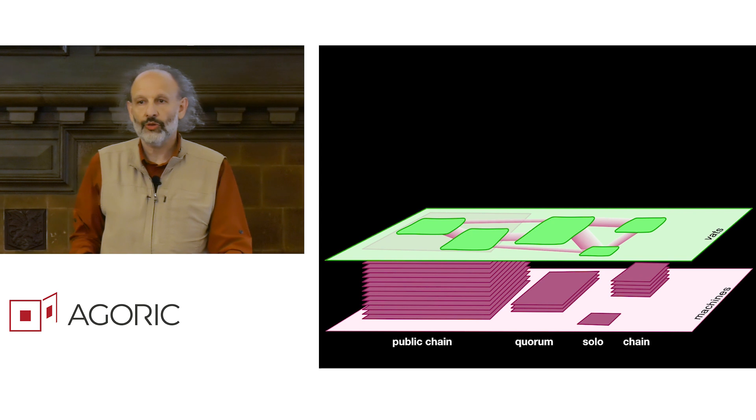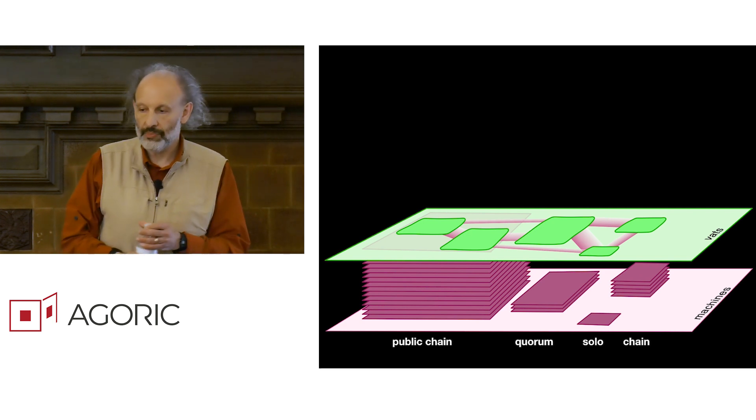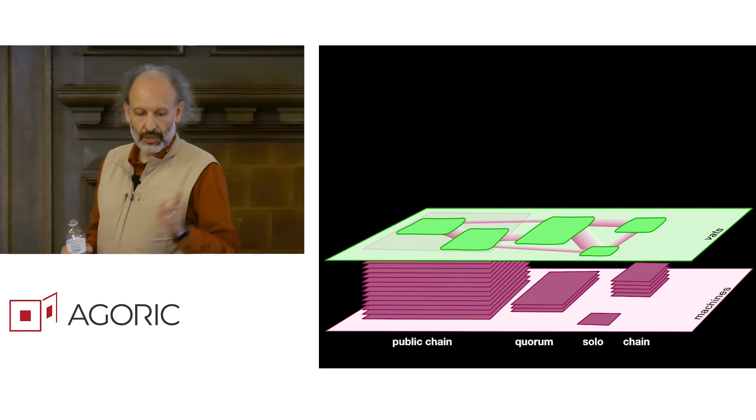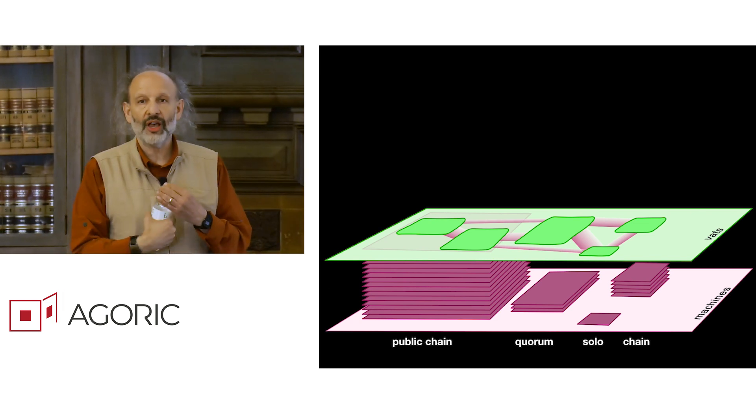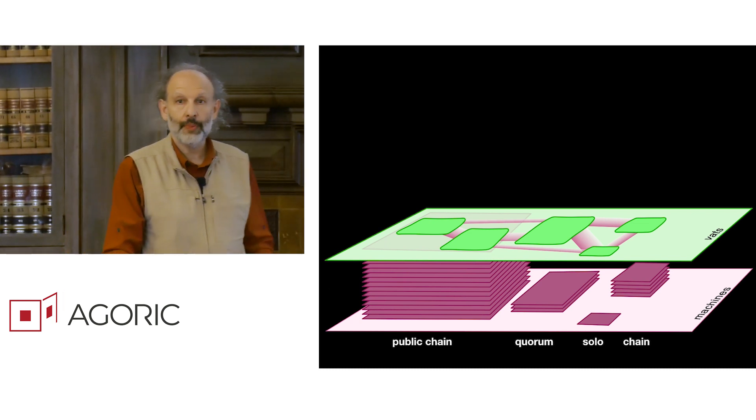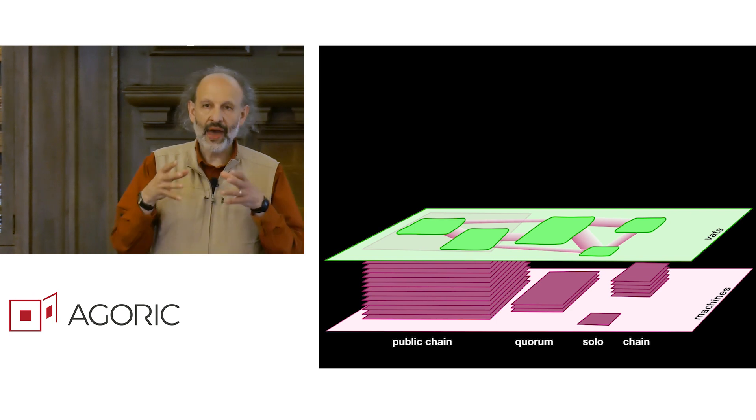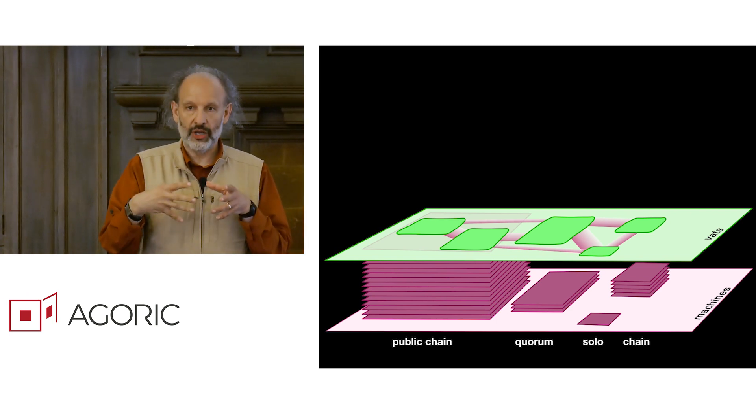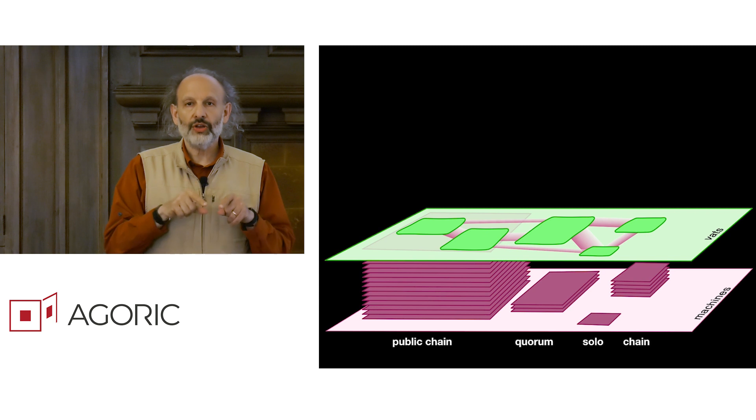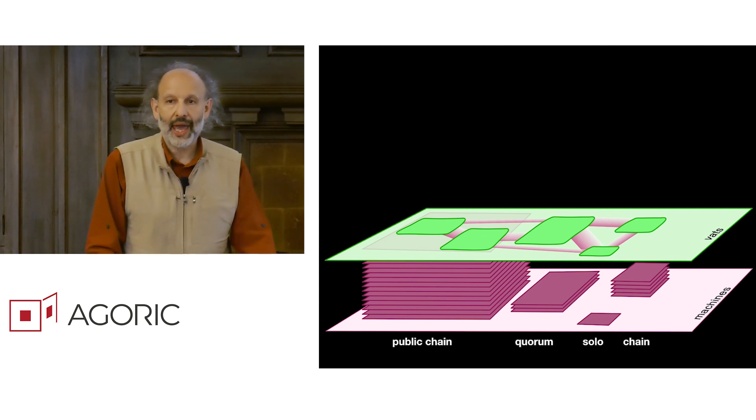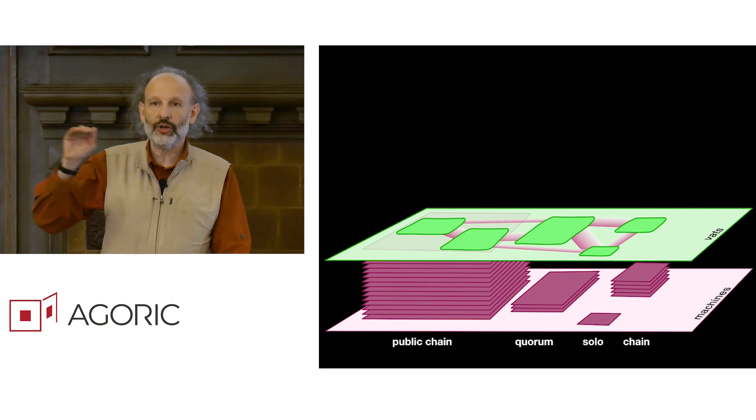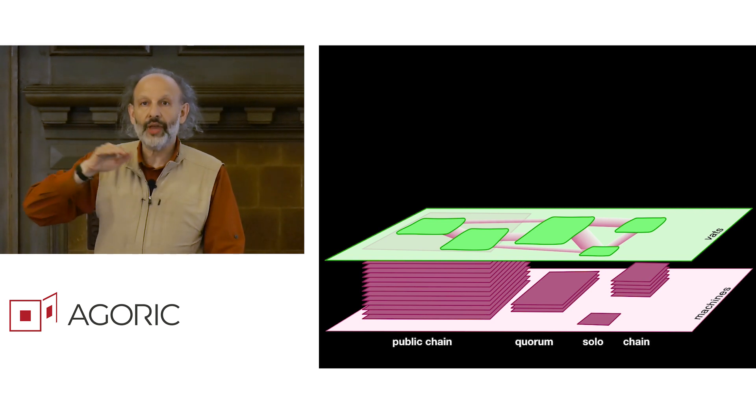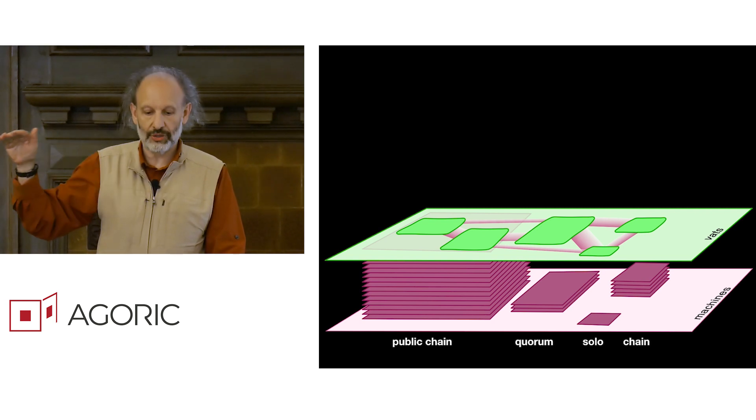But each of these machines is only one machine in a network of assumed to be mutually suspicious machines. So on top of this, we put our VAT layer. The VATs are the individual green rectangles here, and that's our process-like unit of computation. A VAT is an island of synchrony. VATs interact with each other only asynchronously. And they interact by sending asynchronous messages over these data pipes that connect one VAT to another.